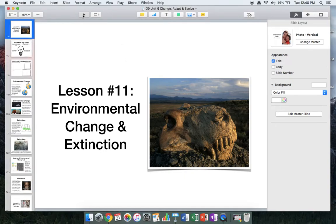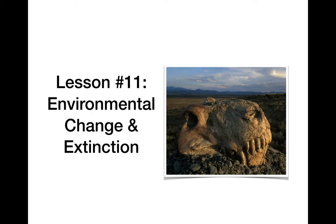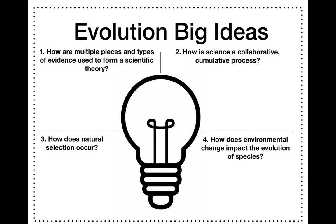Okay, Grade 9, this is lesson number 11: Environmental Change and Extinction. This is a very short lesson because we're mostly working on a lab activity today. I want to make sure I give you a good grounding in the vocabulary you need and some other examples. We're on to our fourth and last big idea: how does environmental change impact the evolution of species? Write that down in your notebook.